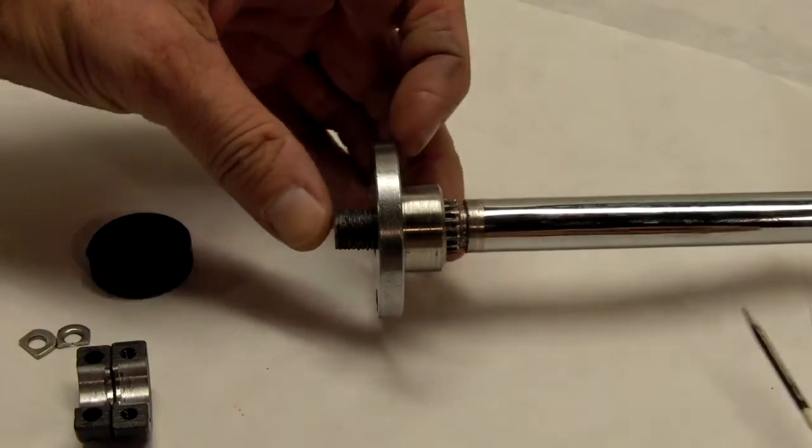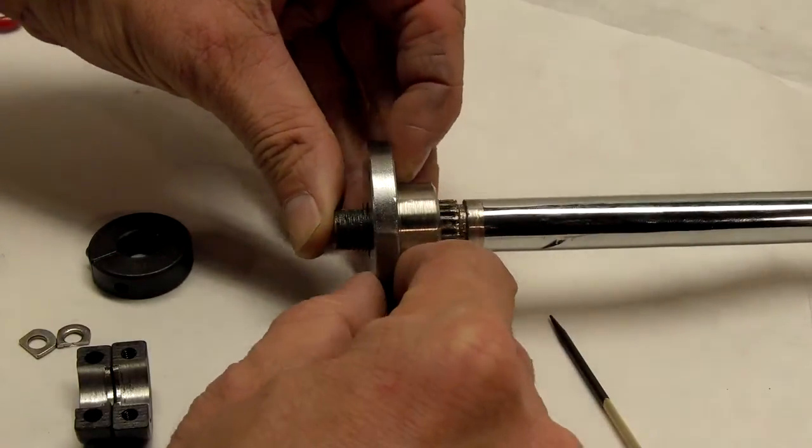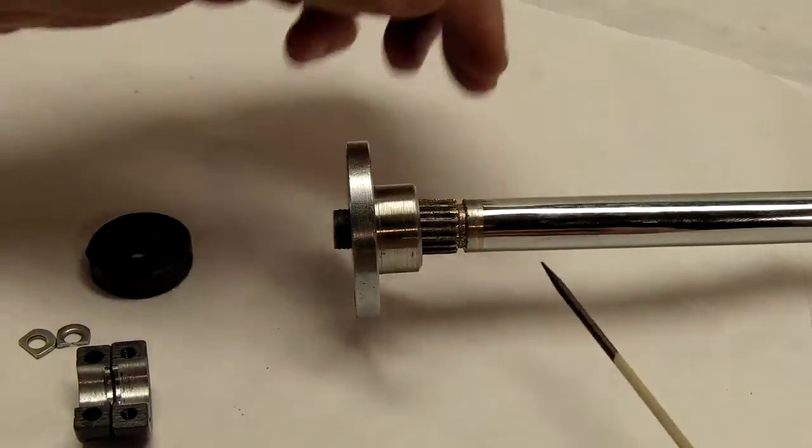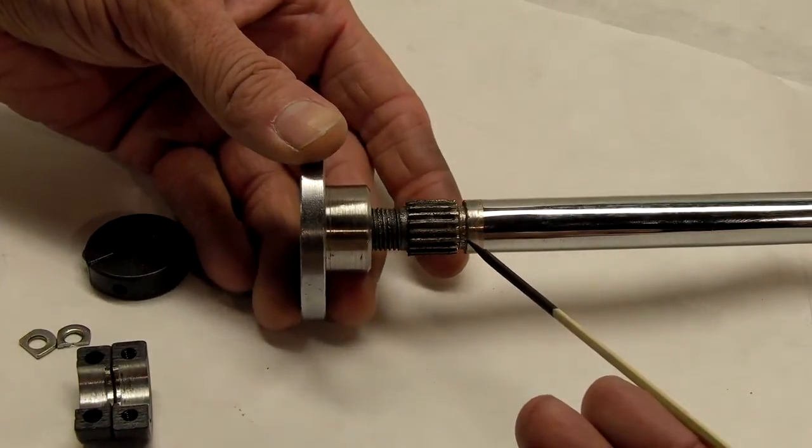This is a steering shaft hub. I wanted to show you this trick for solving a problem with these types of parts.